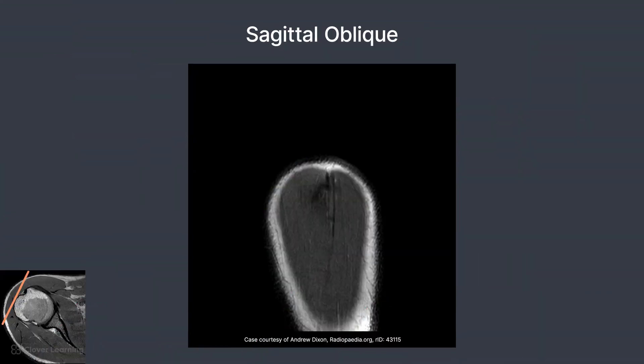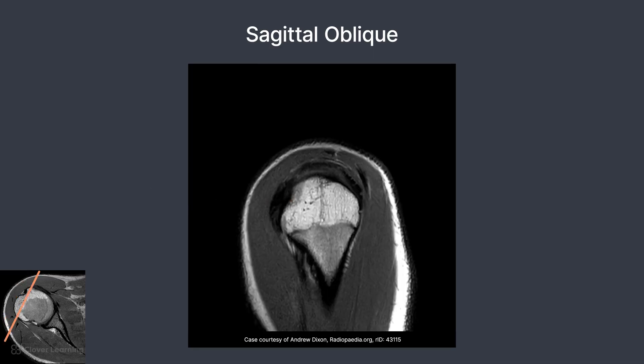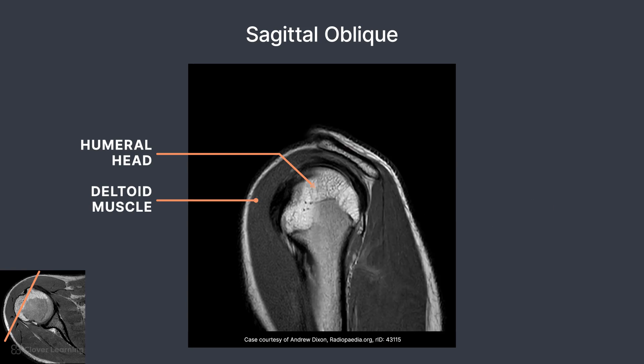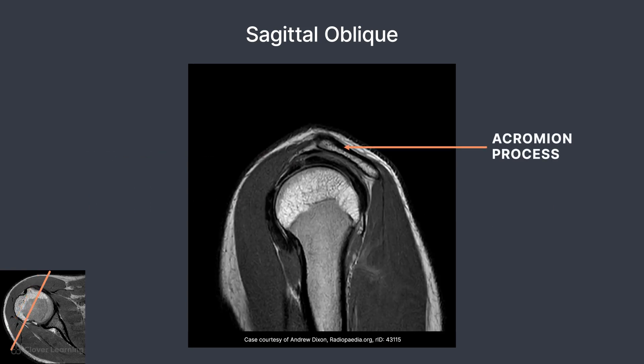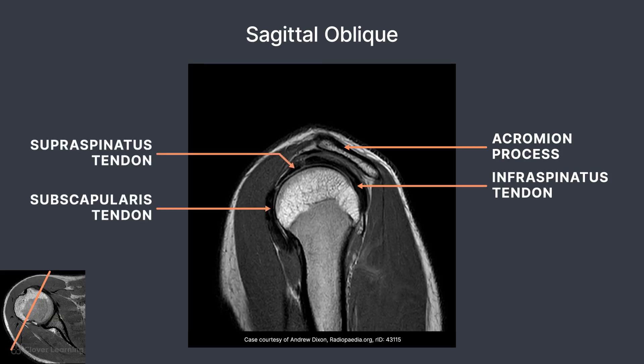Finally, let's take a look at a few sagittal oblique images. Starting laterally, the deltoid muscle is located centrally. Moving medially, the humerus begins to emerge, surrounded by the deltoid muscle. The acromion is demonstrated on the superior aspect of the joint. On this slice, we can see some specific tendons of the rotator cuff. The infraspinatus, supraspinatus, and subscapularis are demonstrated as dark areas surrounding the humeral head.